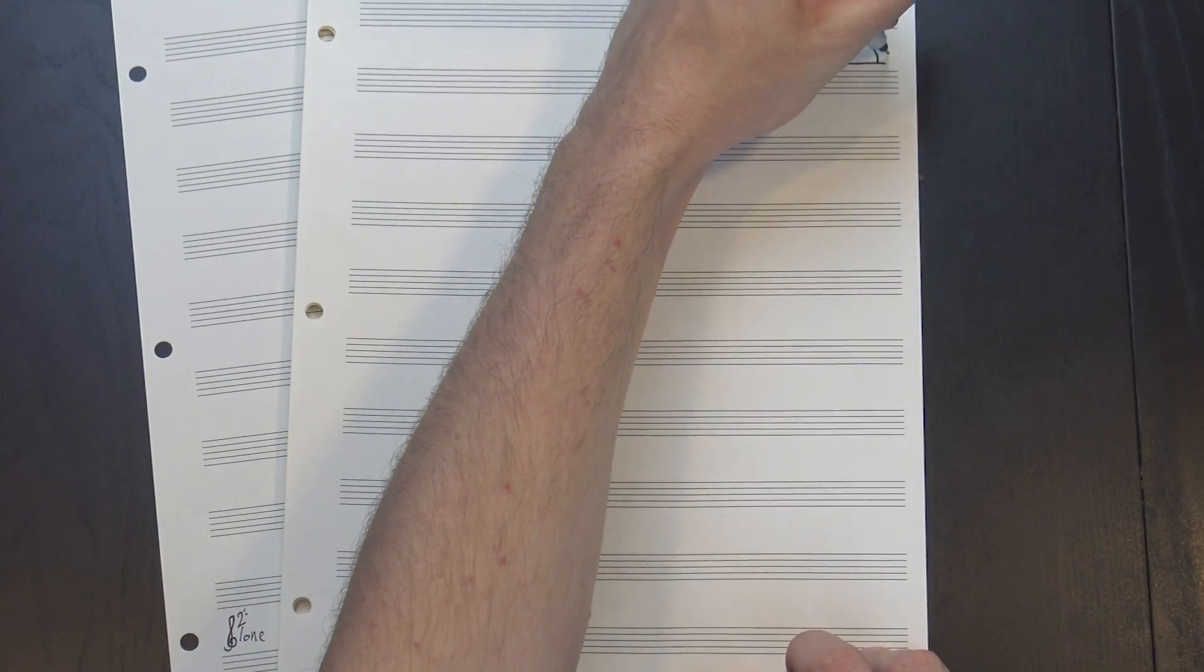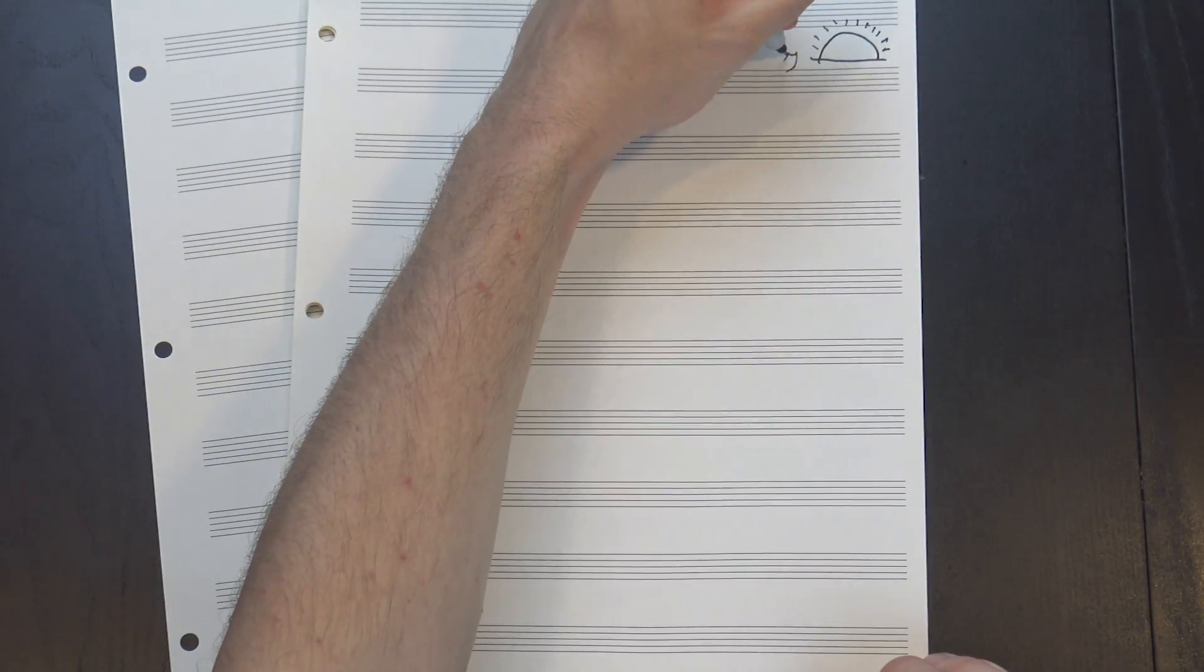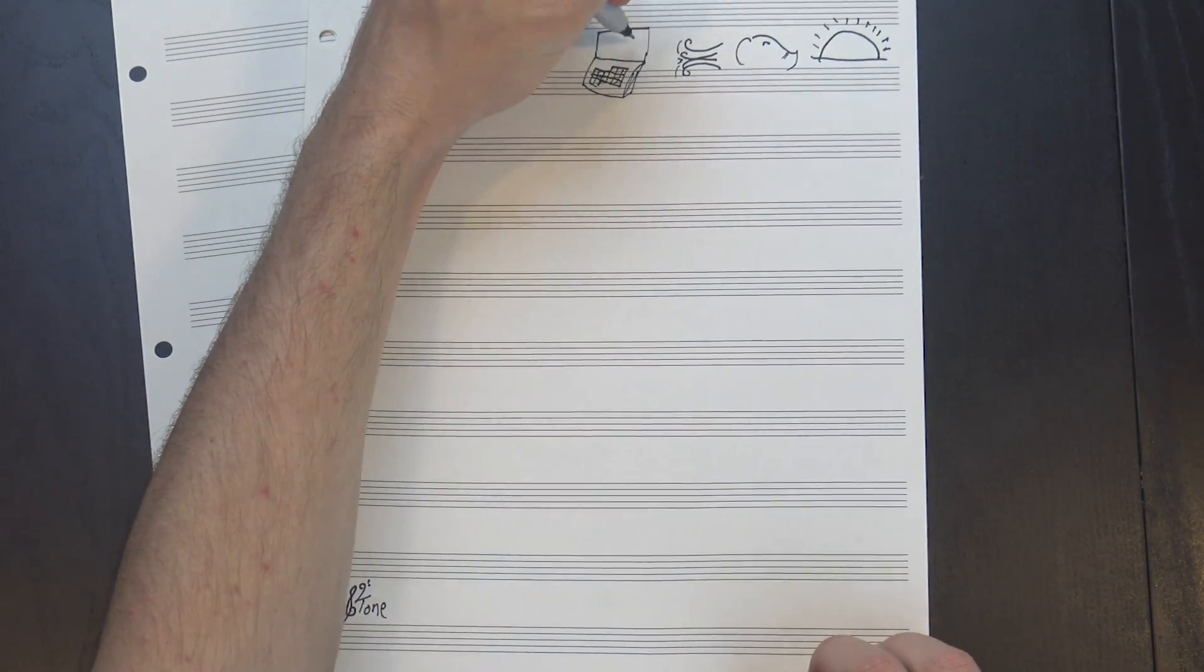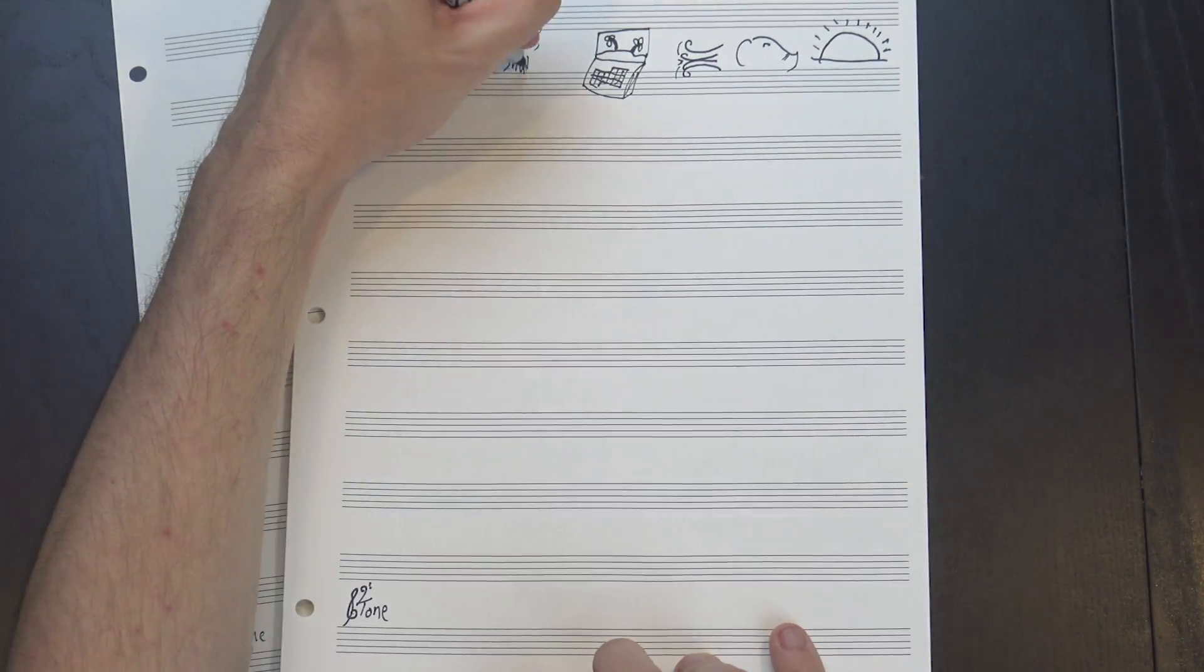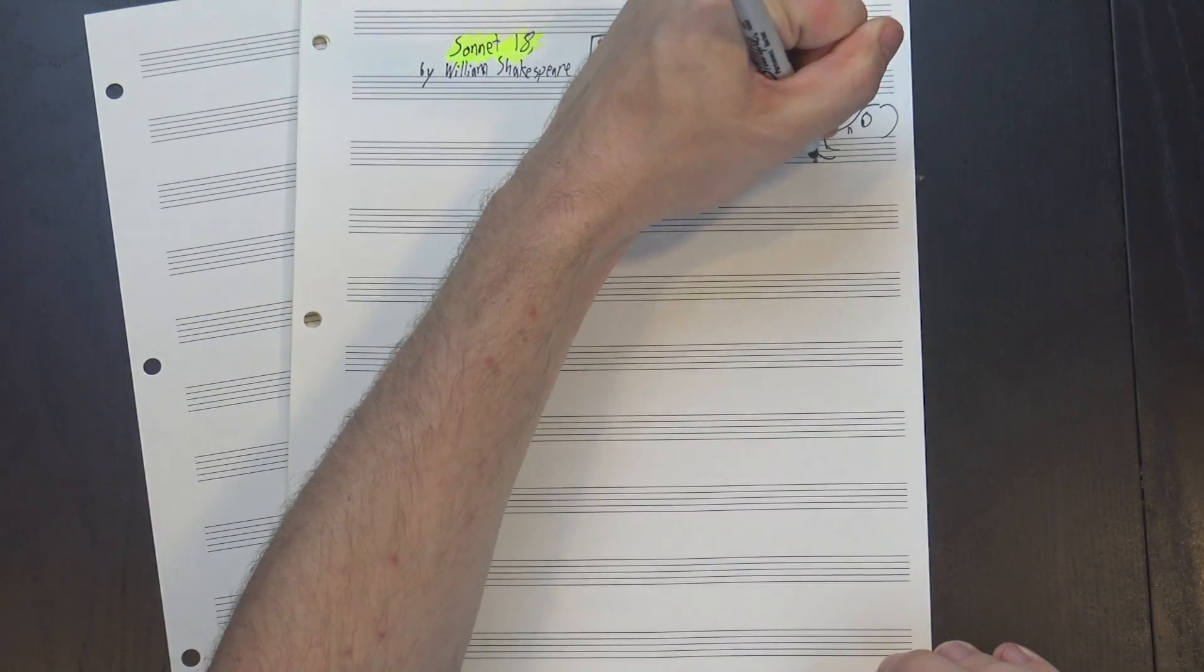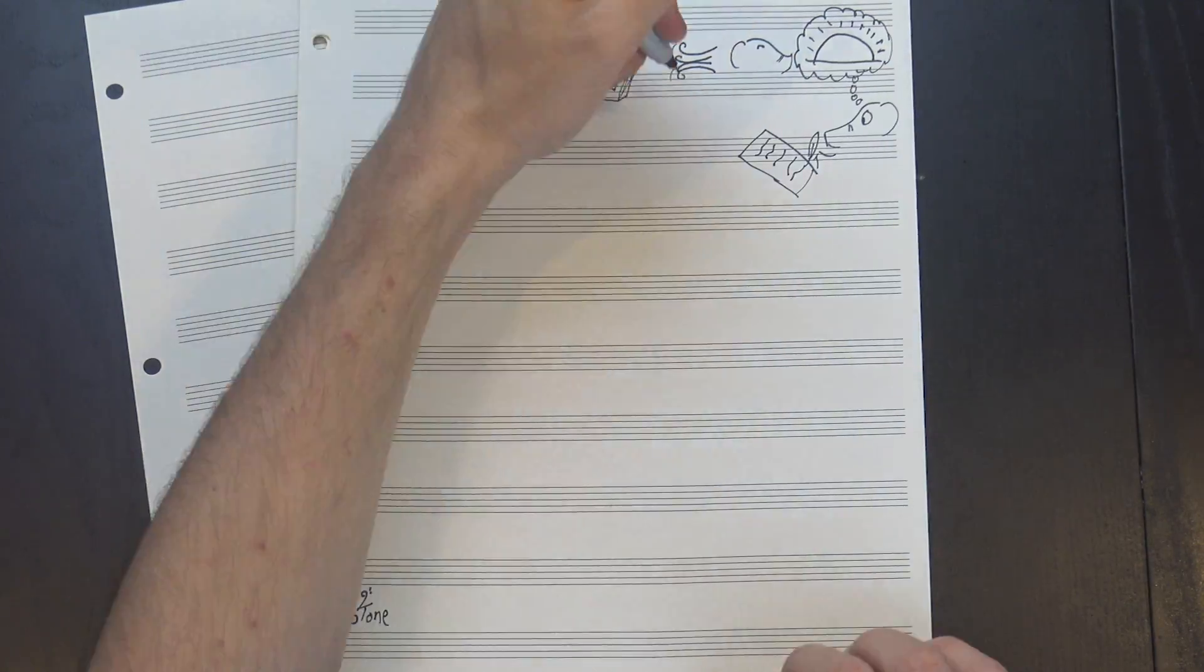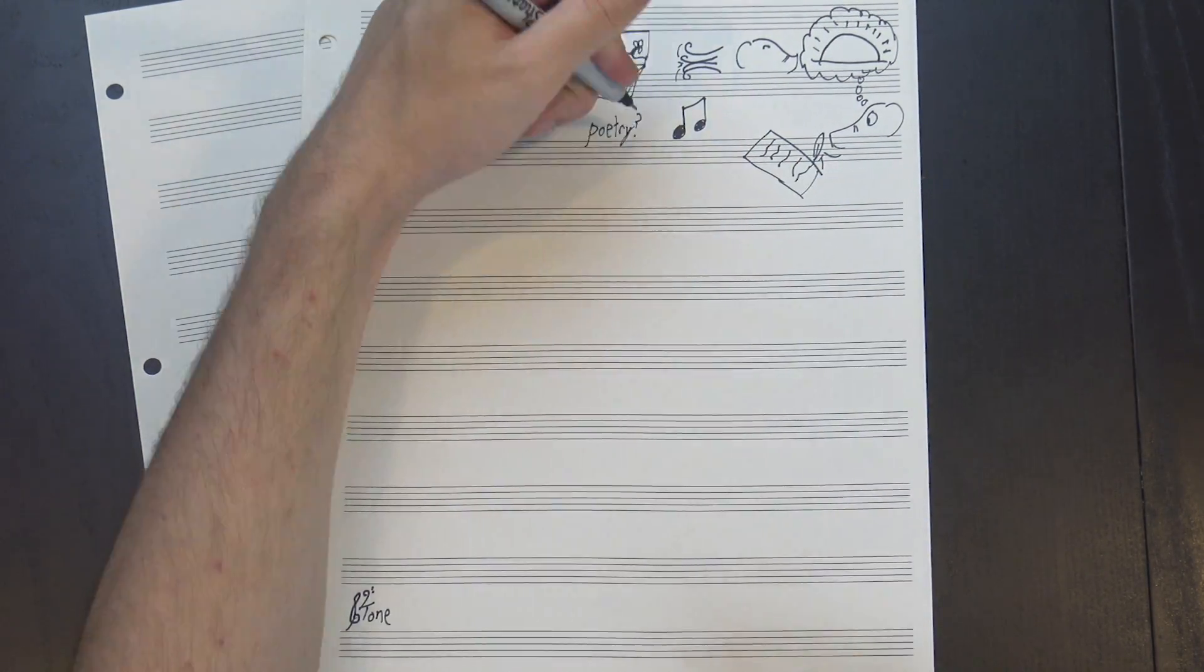Hey, welcome to 12tone! Shall I compare thee to a summer's day, thou art more lovely and more temperate? Rough winds do shake the darling buds of May, and summer's lease hath all too short a date. That's the beginning of William Shakespeare's Sonnet 18, probably one of the most famous poems ever written, even if many people only know the first line. But this is a music channel, why are we talking about poetry?